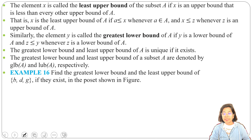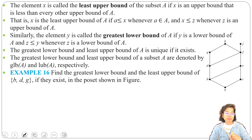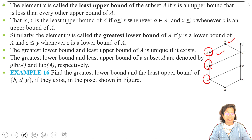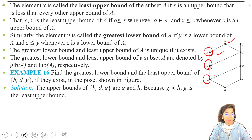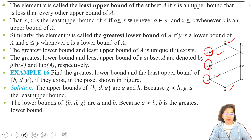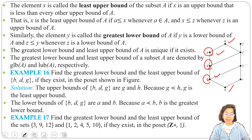Example 16: Find the greatest lower bound and least upper bound of {B, D, G} if it exists in the poset shown in the figure — the same figure as the previous example. For {B, D, G}, its upper bounds are G and H. From G and H, G is the lowest, so the least upper bound is G. Its lower bounds are B and A. From B and A, B is the highest, so B is the greatest lower bound.